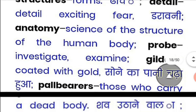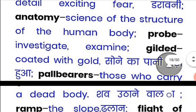'Probe' means to investigate something. 'Gilded' — earlier we read 'glided' meaning to move smoothly, but 'gilded' means to coat something — to cover an object with gold.